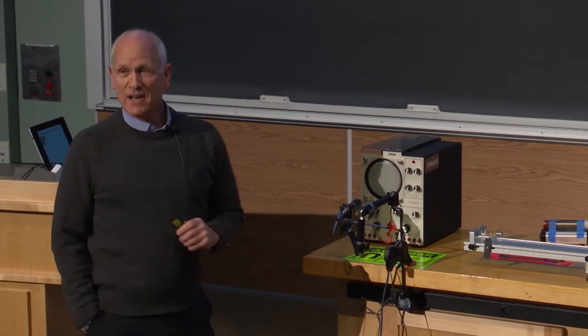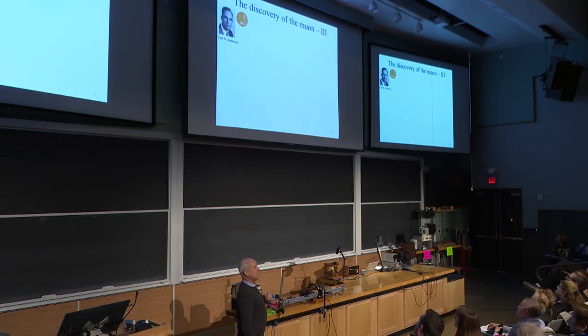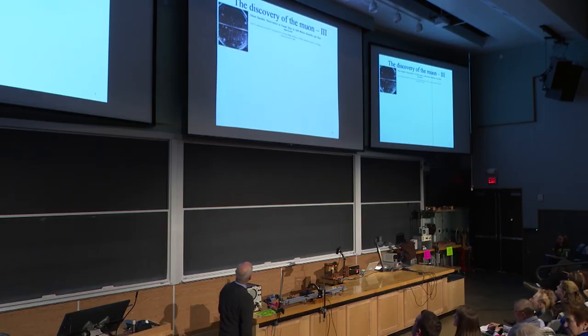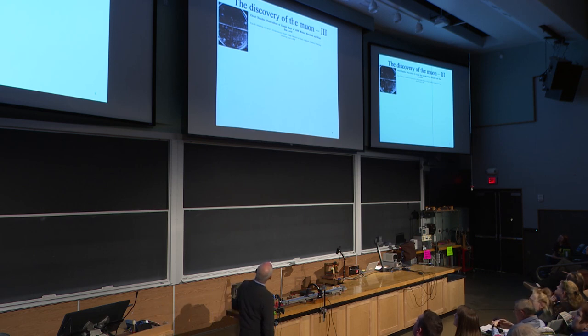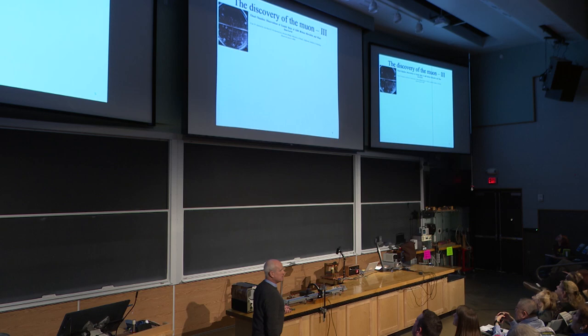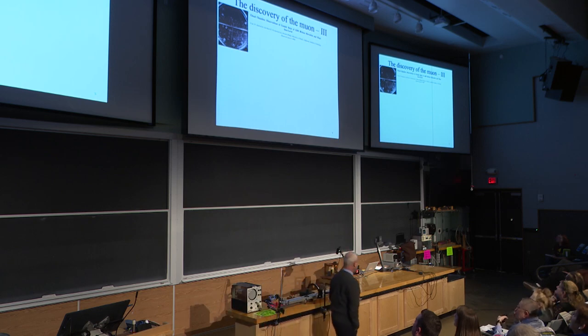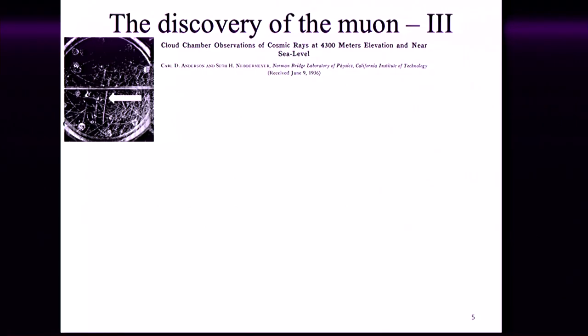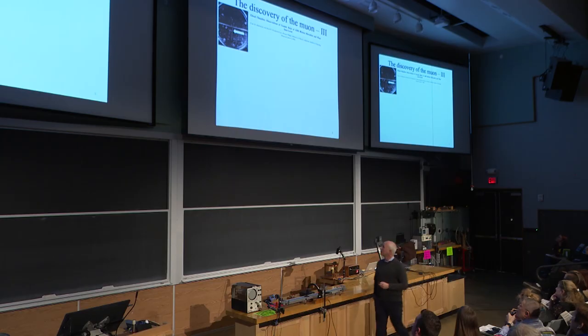Anderson won a Nobel Prize for that work in 1936, but he did not rest. And working with Seth Nedemeyer, another physicist at Caltech, they continued. This is also one of those photographs, but it's a different one. And there was this track that was really hard to understand. You can sort of see this is the same picture. There's a plate through the middle and they didn't know what this was. It was mysterious. People were discussing it for quite a long time.